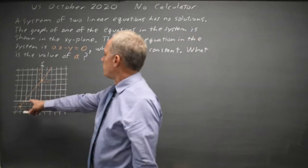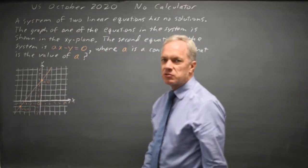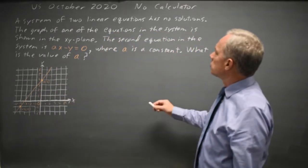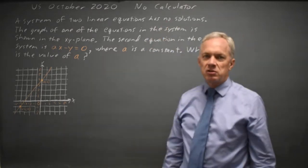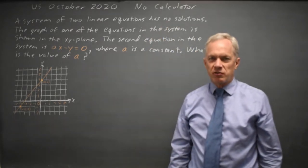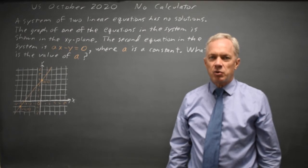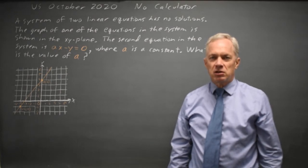We have the graph of one equation in the systems of equations where we're told that there are no solutions. If there are no solutions to a system of linear equations, then both equations are parallel.